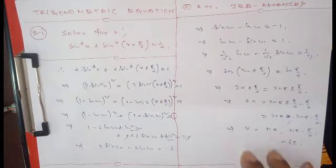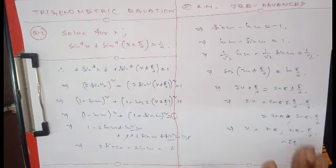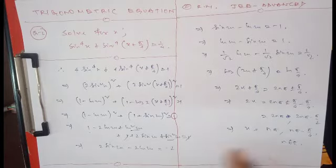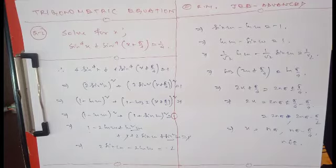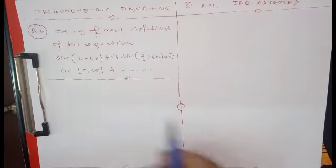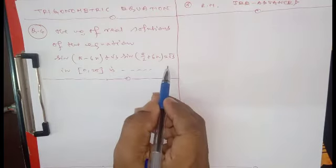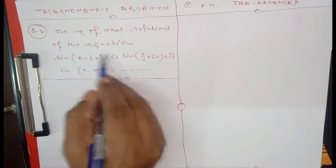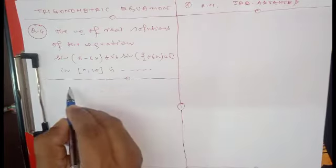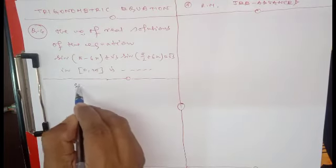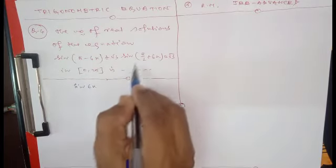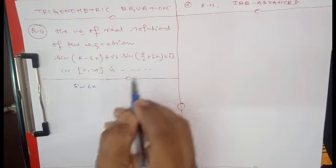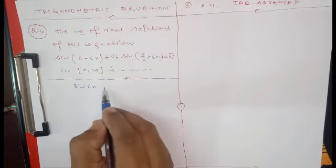So x = nπ - π/4, n belonging to integers. This type of question is generally asked in exams — you need to understand it clearly and then practice it well. Now another very good conceptual question: find the number of real solutions of the equation involving sin(π - θ) = sin θ and sin(π/2 + θ) = cos θ.